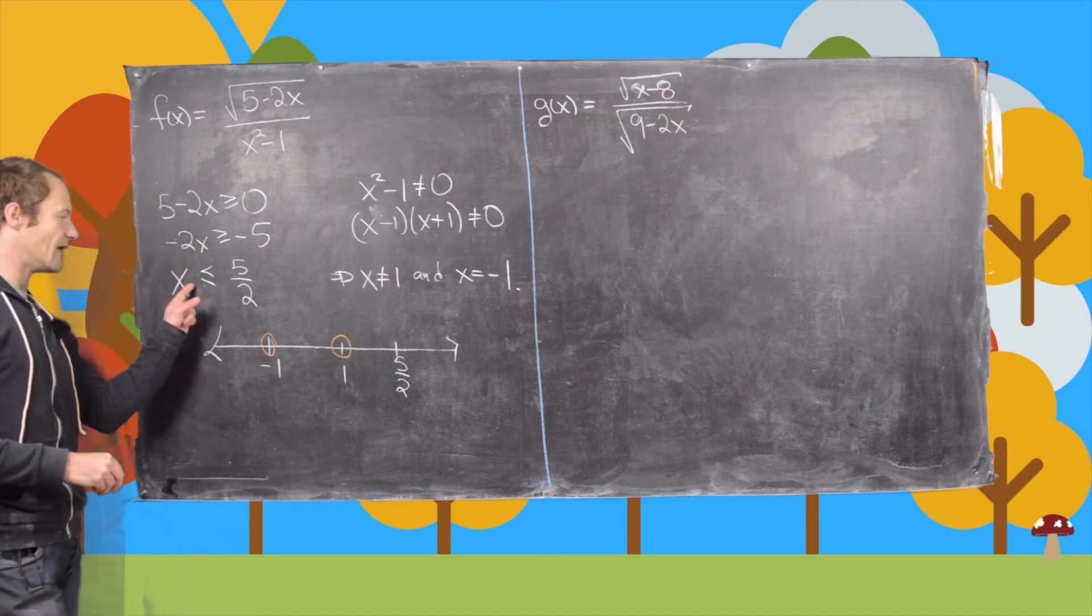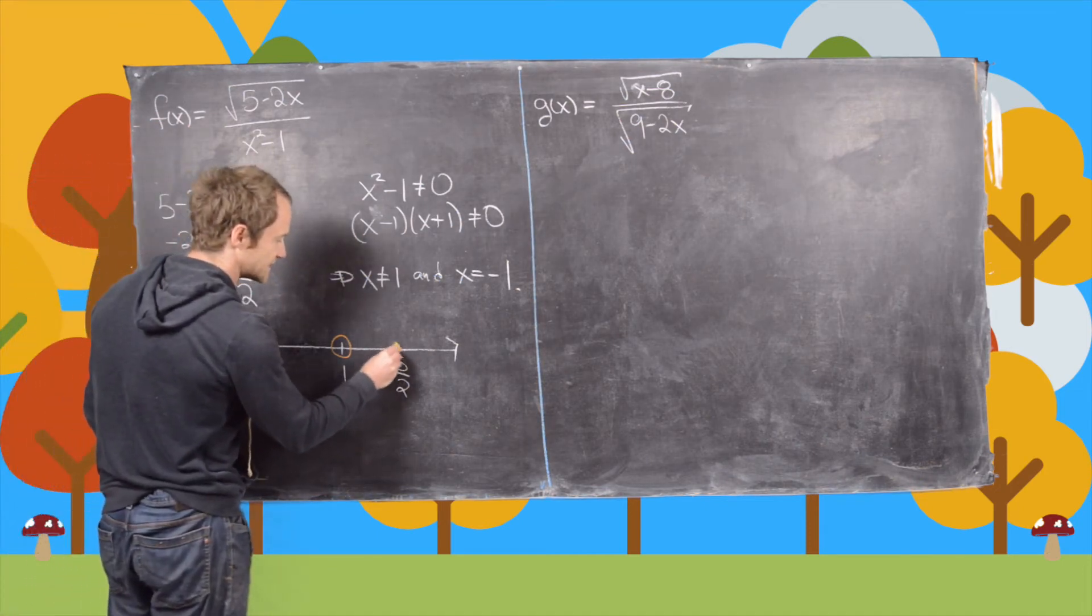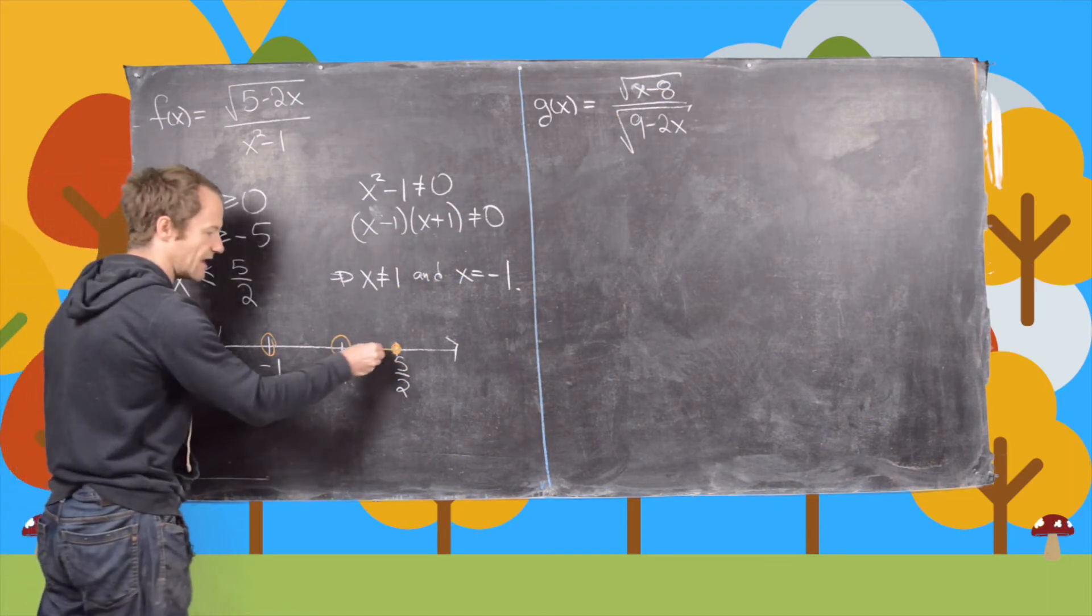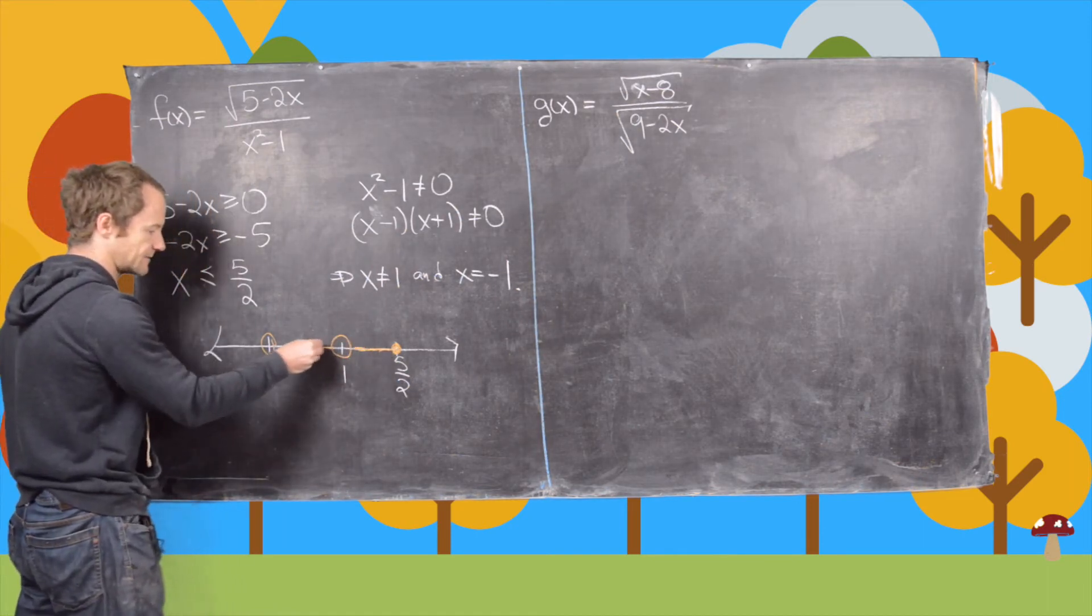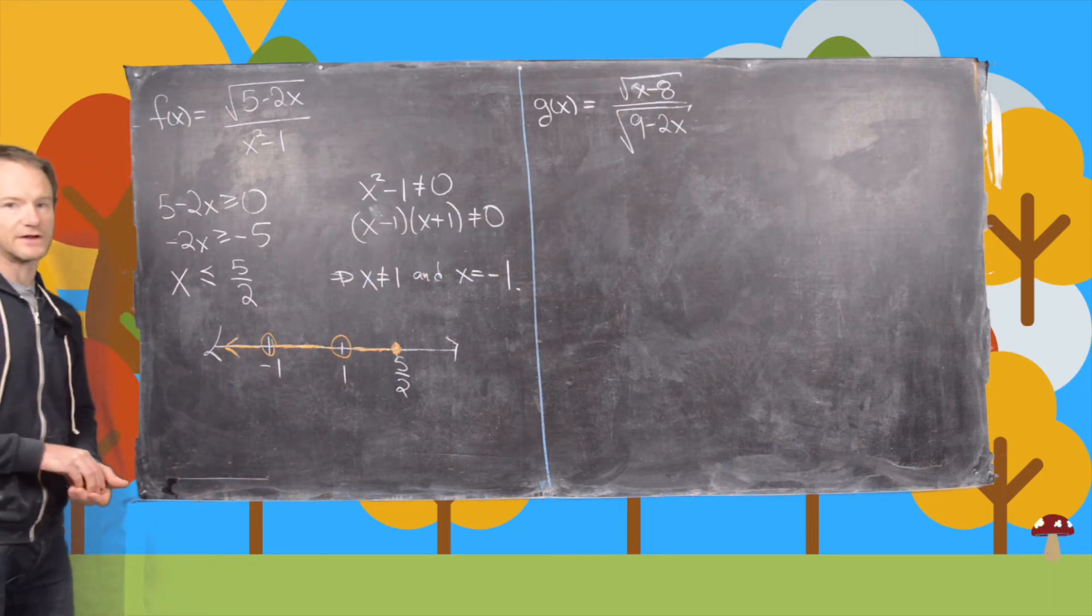And then everything has to be less than 5 halves. So we can put a solid dot there because it's less than or equal to 5 halves. And then we graph to the left. So that's the graph of the domain.